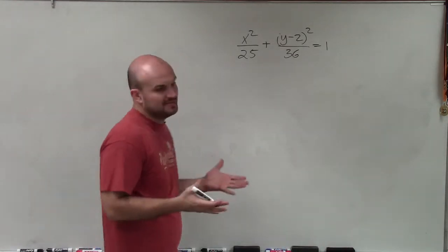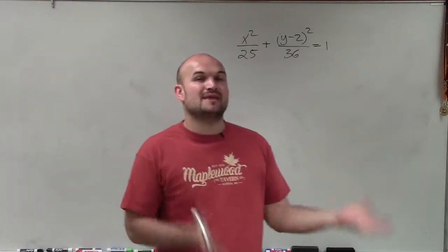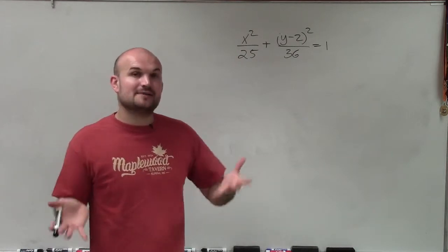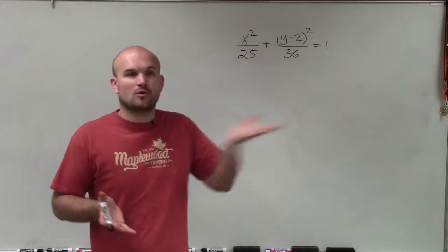But to be able to do that, we need to be able to identify the center, the a, and the b. So first we need to identify what type of ellipse are we looking at, is the major axis vertical or horizontal?